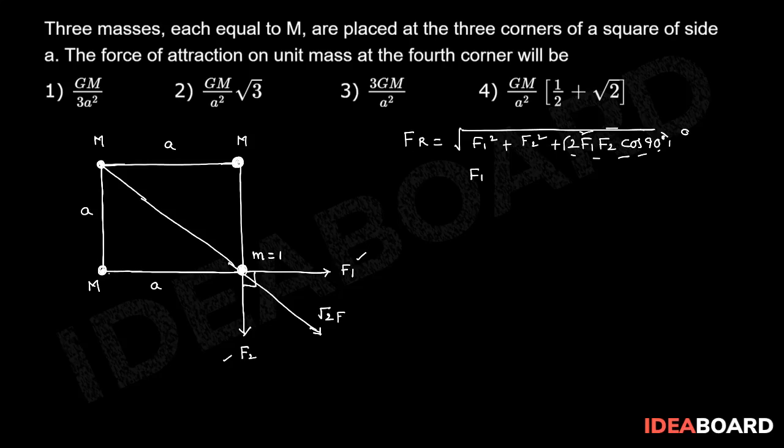But F1 and F2 are equal, which is equal to G capital M into 1 by A square, that equals GM by A square. So resultant force FR is equal to root over F square plus F square. Since F1, F2 both are equal to F, that is root 2F.